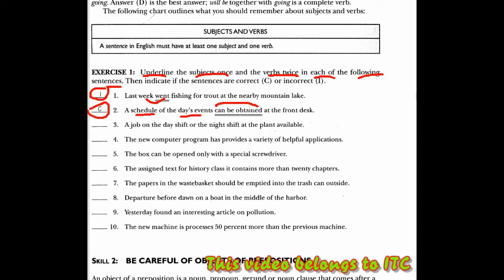Pada kalimat nomor 3, kita dapat melihat a job, ini adalah sebagai subjek, kita garisbawahi job-nya, on the day shift, day shift atau night shift, ini adalah objek preposisi. Tapi di sini juga kalimatnya incorrect, mengapa? Karena tidak ada predikatnya. Yaitu di sini, at the plant, ini bukan pada tanaman, tapi pada pabrik tersebut. Maka di sini harusnya is available, tersedia. Ini is-nya tidak ada predikat, maka kalimatnya salah. Harusnya di sini is-nya digaris 2 kali.